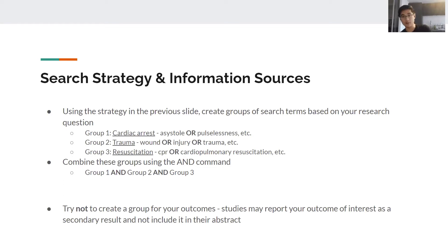One important recommendation: don't include a group for your outcomes in the search strategy. I could have included a group for neurological outcomes, but the problem is that many studies may report it as a secondary result buried in the main text, which the search function won't capture. If you include an outcomes group, you may miss important studies. Reviewers are unlikely to notice that you included outcomes in your strategy, but you might miss key studies without realizing it. To prevent that, just don't create a group for outcomes and sort through them manually.